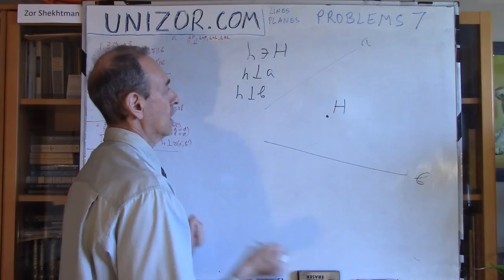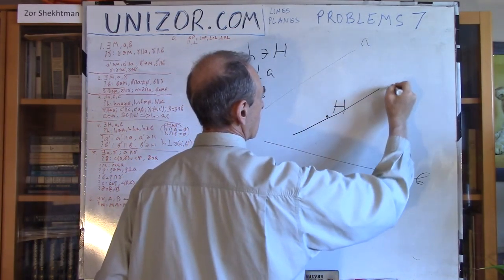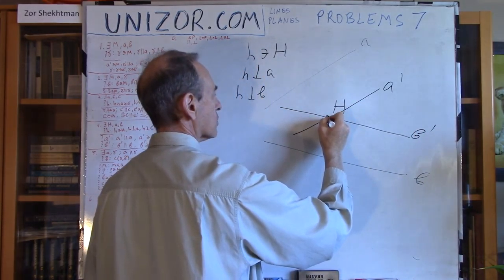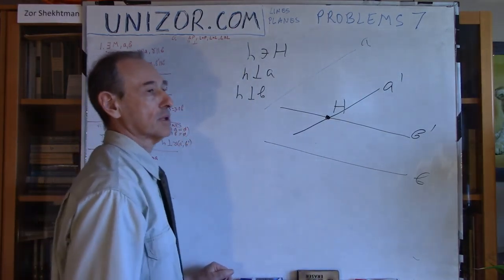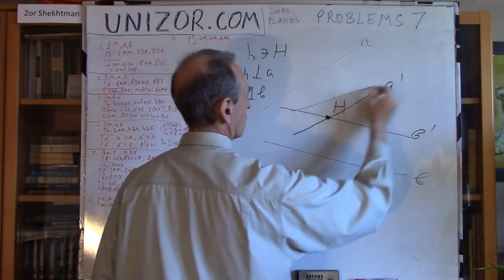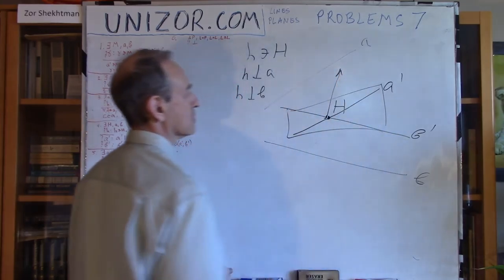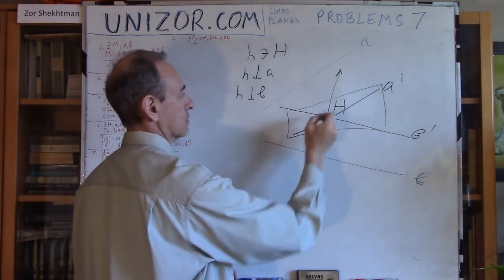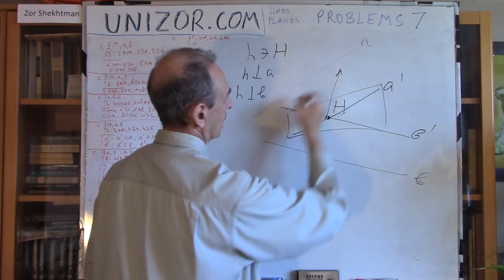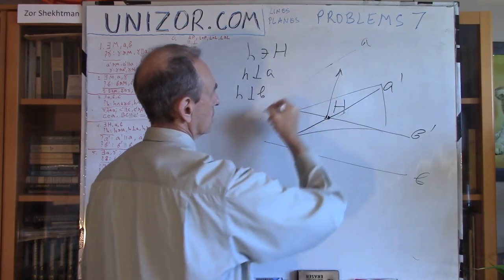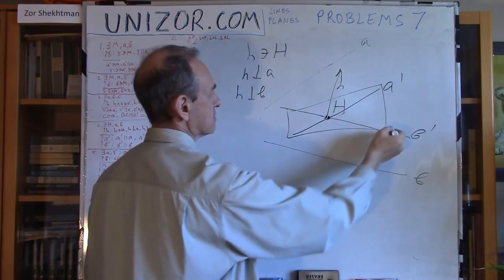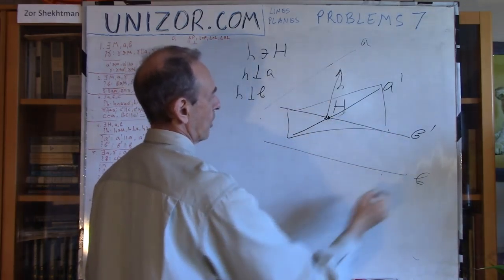That's exactly what I'm going to do. I will bring A parallel to A through H — put A'. Parallel to B, put B'. So both now go through point H. How can I build a line perpendicular to both? Well, they define a plane, and I just build the perpendicular to this plane from the point — uniquely defined. That perpendicular to the plane is perpendicular to A'. Since A' is parallel to A, the perpendicular is also perpendicular to A. Since it's perpendicular to the plane, it's perpendicular to B' as well. And since B' is parallel to B, then H is perpendicular to B as well.